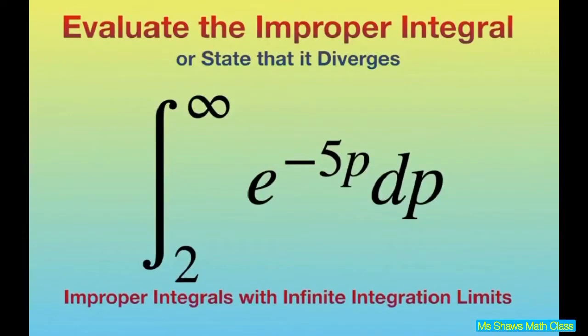Hi everyone, we're going to evaluate the improper integral from 2 to infinity e to the power of negative 5p dp. It's improper because we have an infinite integration limit given here.